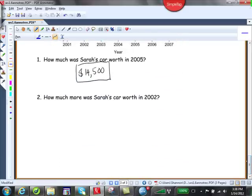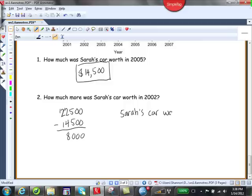So basically to figure out how much more her car was worth, we would say $22,500 minus $14,500. And then we'll get 12 minus 4 is 8. So do you see that answering the question, we would say, Sarah's car was worth $8,000 more in 2002.